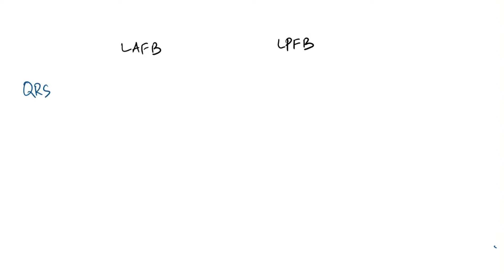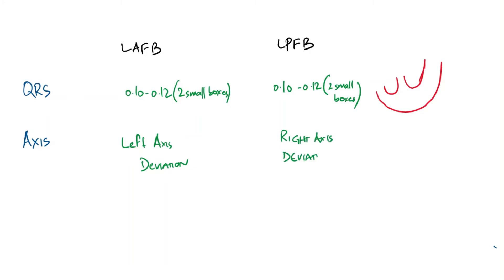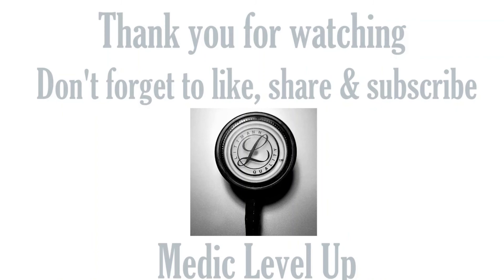To review: in both left anterior and left posterior fascicular blocks, the QRS duration is 0.10 to 0.12 seconds — two small boxes. The left anterior fascicular block causes leftward axis deviation with predominantly negative inferior leads and positive lateral leads. The left posterior fascicular block causes right axis deviation. When diagnosing a left posterior fascicular block, always rule out other causes of right axis deviation. Thank you for watching — don't forget to like, share, and subscribe.